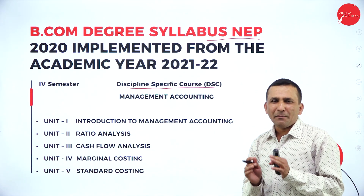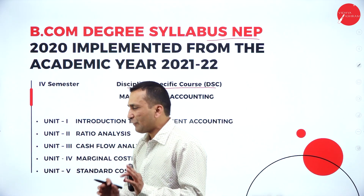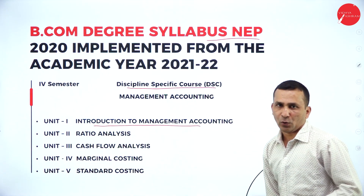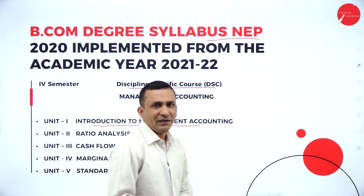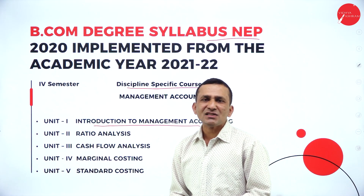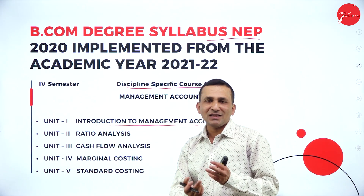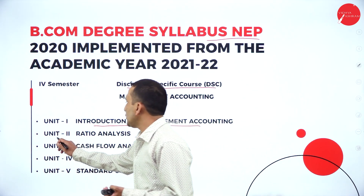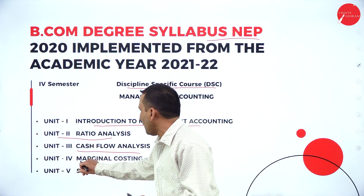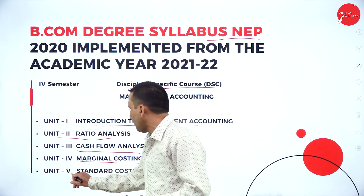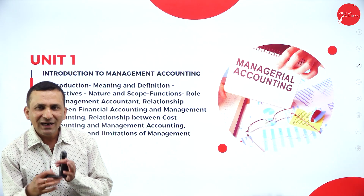Management Accounting is a core subject in this discipline. There are five units: the first unit is Introduction to Management Accounting, the second unit is Ratio Analysis, the third unit is Cash Flow Analysis, the fourth unit is Marginal Costing, and the fifth unit is Standard Costing. We'll be moving through them one by one.